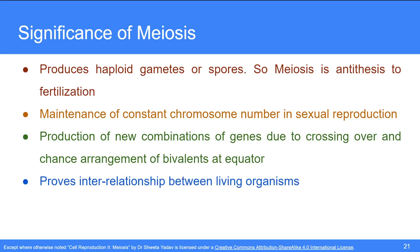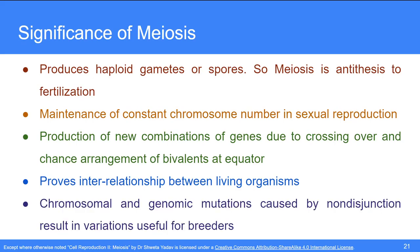Meiosis also proves the interrelationship between living organisms because its details are basically similar in all sexually reproducing organisms. Chromosomal and genomic mutations caused by non-disjunction result in variations useful for breeders who propagate them using artificial selection. Variation occurs in mitosis also, but meiosis produces a larger number of variations because of recombination during crossing over, independent assortment, and non-disjunction. So the rate of variation is higher in meiosis compared to mitosis. Finally, meiosis also helps in multiplication as one cell gives rise to four daughter cells.